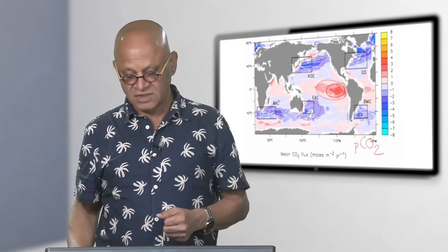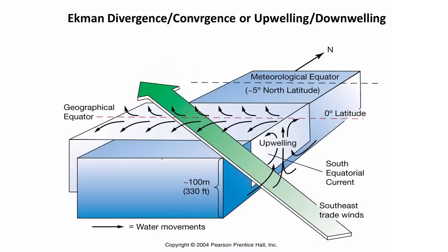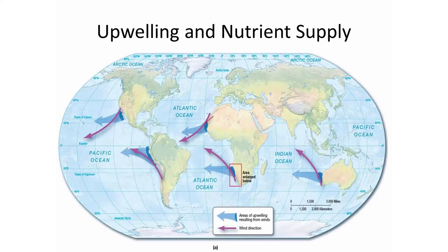If the ocean refuses to take up CO2 then global warming will accelerate, because more CO2 remaining in the air means faster warming. As you blow trade winds you cannot easily push water across the equator — the water is pushed left in the southern hemisphere and right in the northern hemisphere, so water has to come up at the equator. The same thing happens at the coast: as winds blow this way, water is dragged away from the coast and colder water comes up.